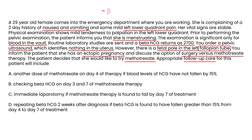Recall that one condition for methotrexate is that the beta-hCG must be less than 5,000 — which is the case here at 2,700. The appropriate follow-up is to measure beta-hCG on day four and day seven of treatment. If the beta-hCG level has fallen by greater than 15 percent from day four to day seven, then the treatment is confirmed to be working.